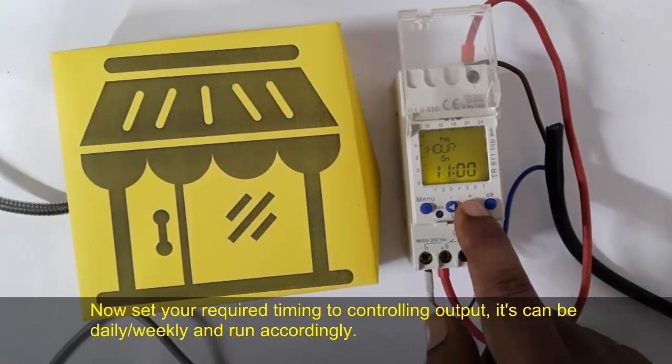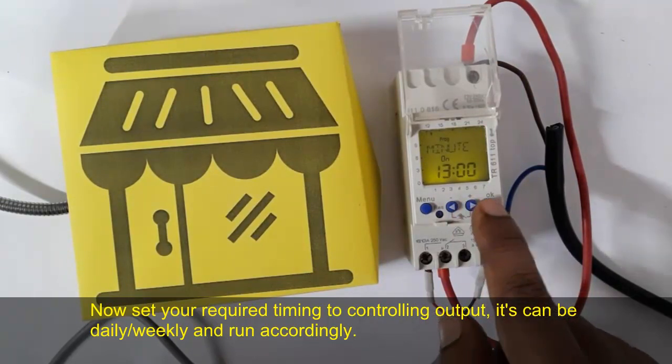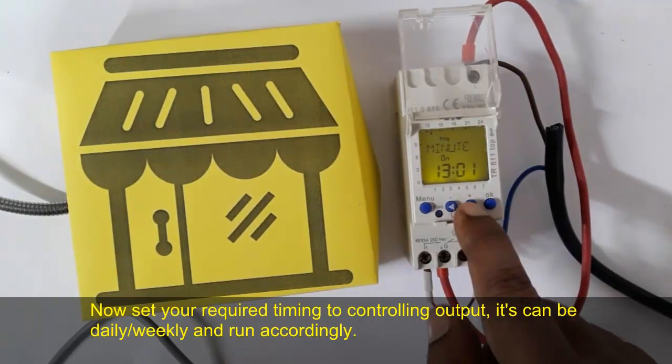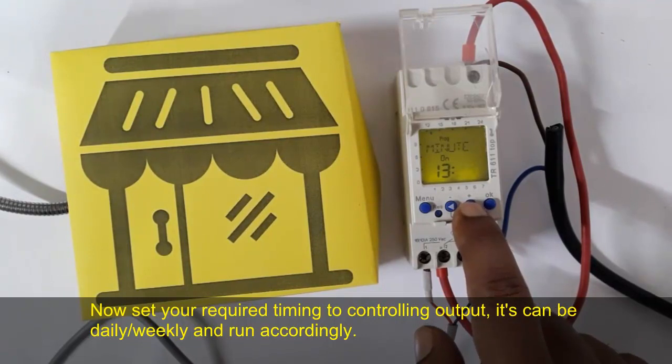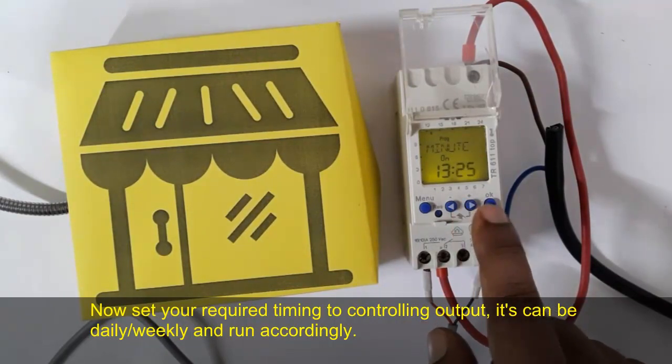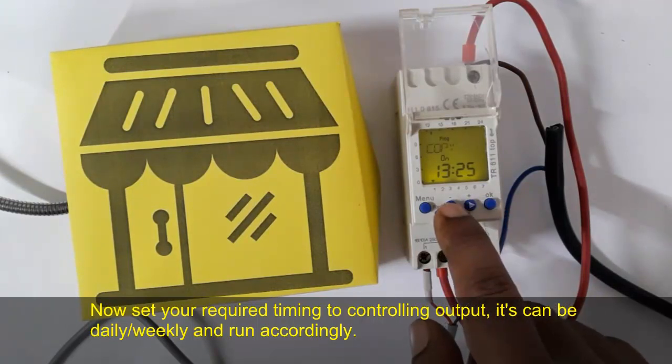You can select timing as per your requirement for on time and off time. Set when you want to turn on and when you want to turn off the device, billboard, or your office lighting. You can turn on or off any specific devices at any time in the week as per your desired time.